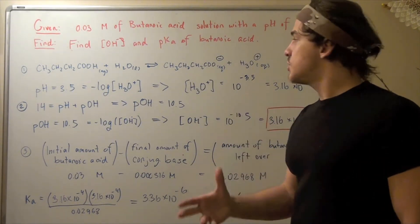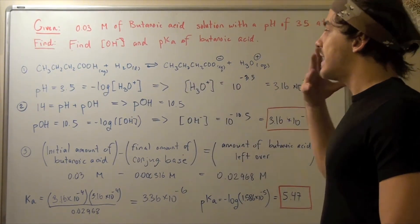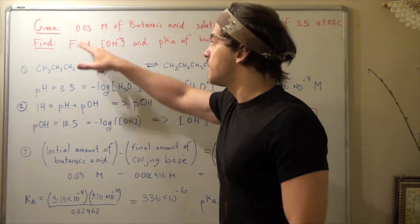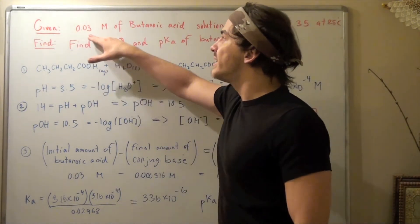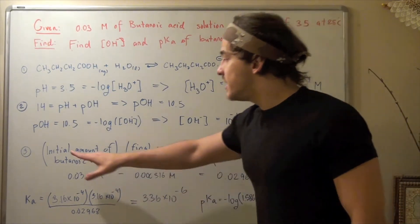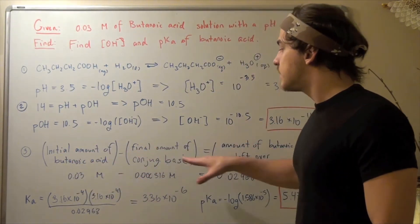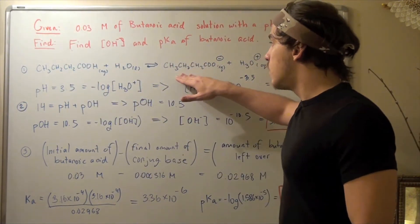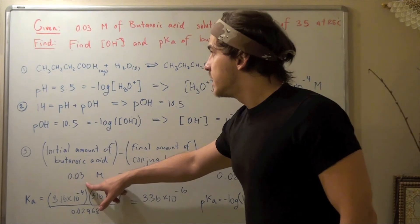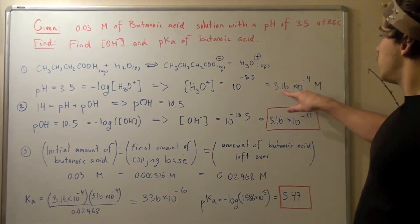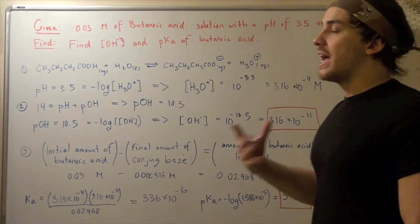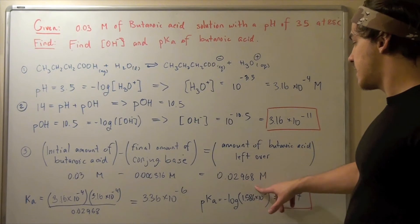Now we have the equilibrium concentration of conjugate base and conjugate acid, and I have to find the equilibrium concentration of my initial acid. Initially I had 0.03, and at equilibrium I have a little bit less than 0.03 because a little bit dissociated. But how much less exactly? The initial amount of butanoic acid minus final amount of conjugate base will give me the amount of butanoic acid left over. So 0.03, the amount that I began with, minus 3.16 times 10 to negative 4 gives me how much butanoic acid is left over at equilibrium, or 0.02968 molar.